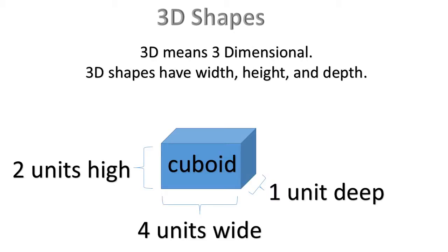3D shapes. 3D means three-dimensional. 3D shapes have width, height, and depth. This cuboid is 2 units high, 4 units wide, and 1 unit deep.